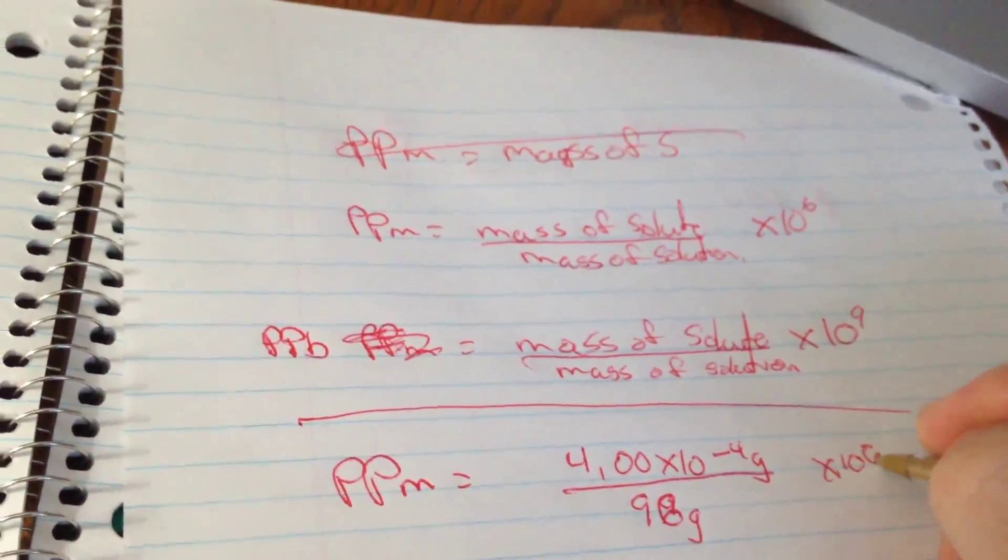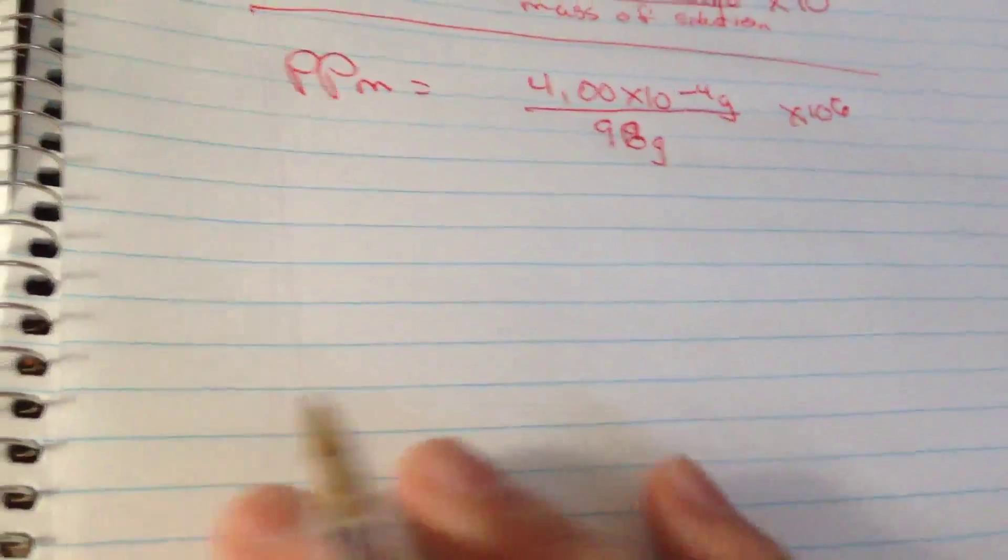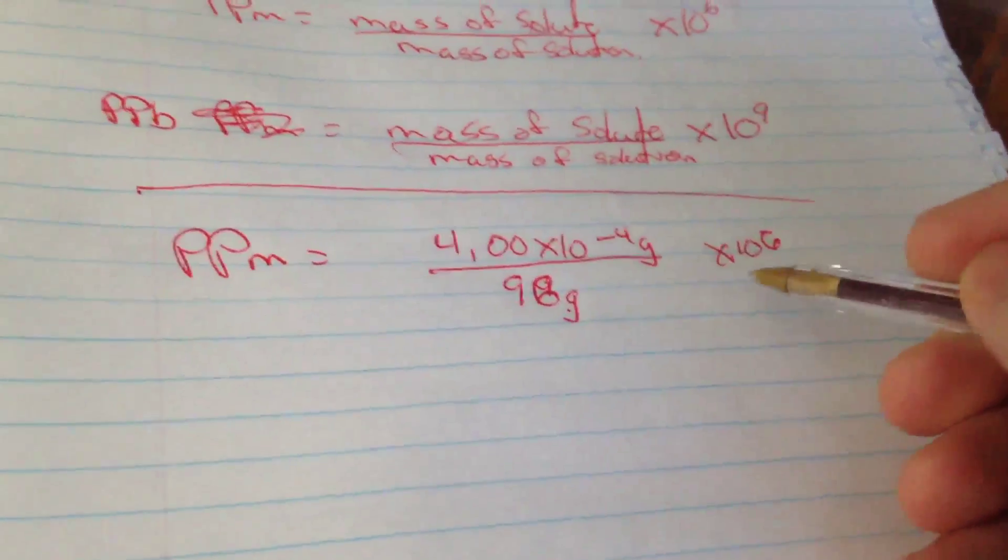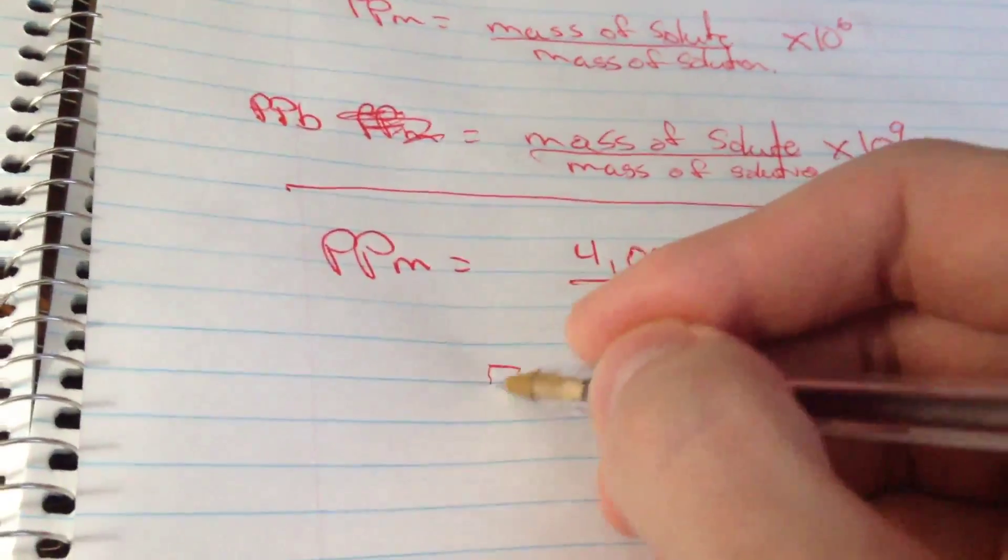times 10 to the 6. So if I work that out, so I'll go 4 times 10 to the negative 4 divided by 96 times a million, and what that's gonna give me is